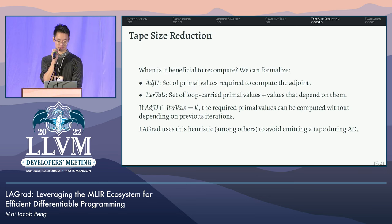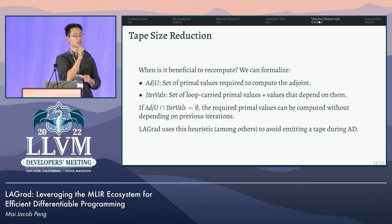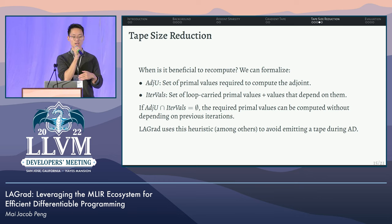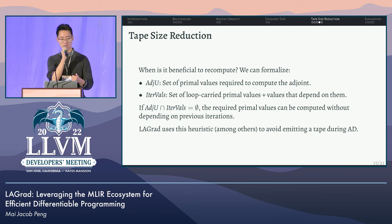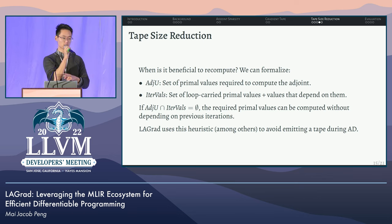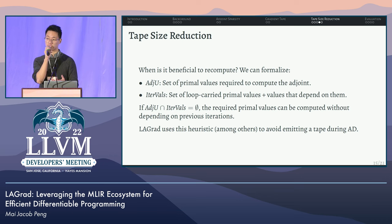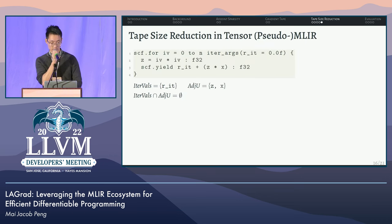How can we tell ahead of time if it is beneficial to recompute? We formalize this with two sets: adjoint-U, the set of primal values used to compute the adjoints — whose computation is prior work we take for granted — and intervals, the set of loop-carried primal values and any values that depend on them. If there's no overlap between these sets, it means the required primal values can be recomputed without depending on previous iterations. This is one of the heuristics LA Grad uses to avoid emitting a tape during the auto-diff procedure.